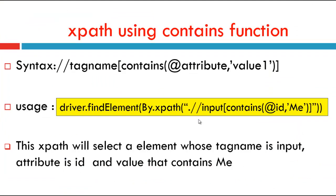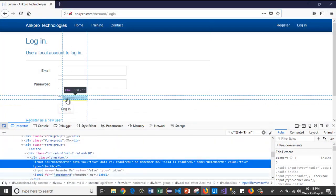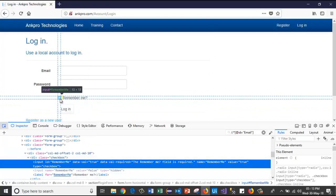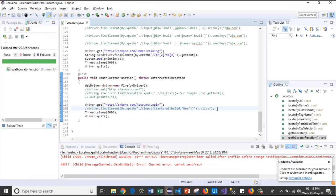Next: XPath using contains function. The syntax is: //tag-name[contains(@attribute, 'value')]. We use it like: driver.findElement(By.xpath("//input[contains(@id, 'me')]")). This XPath will select the element whose tag name is input, attribute is id, and value contains 'me'. For the same 'remember me' checkbox we'll use only the last two letters with the contains function.